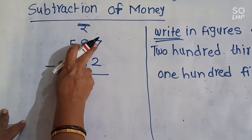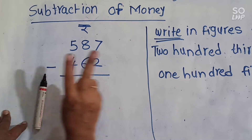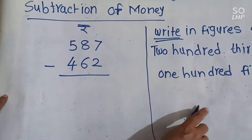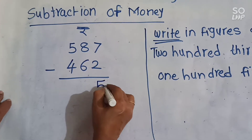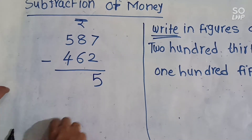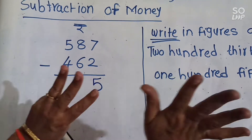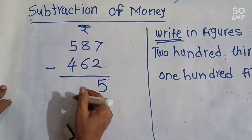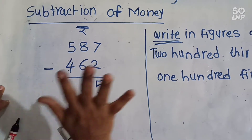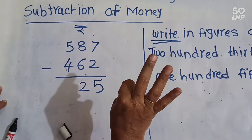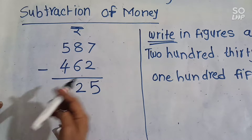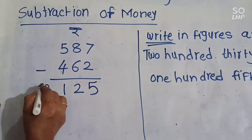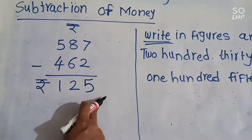First, ones place: 7 minus 2 equals 5. Tens place: 8 minus 6 equals 2. Hundreds place: 5 minus 4 equals 1. So the answer is rupees 125.